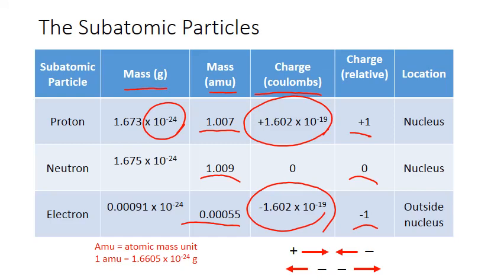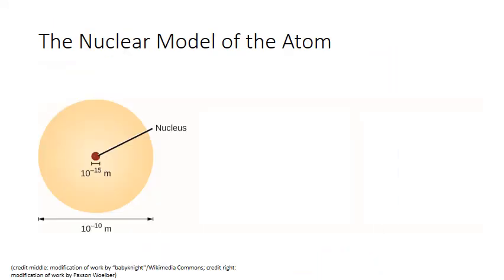These particles also have unique locations within the atom. Both the proton and neutron can be found in the nucleus of the atom, while the electron orbits in the space outside the nucleus. This brings up some interesting space and mass relationships: the proton and neutrons make up most of the mass, while electrons are just a fraction. These massive particles are crammed into a nucleus that occupies only a fraction of the atom's space.